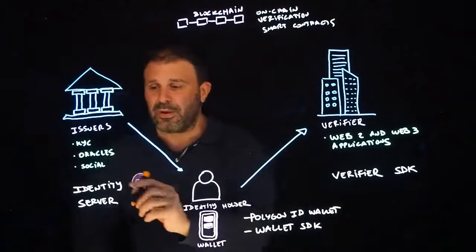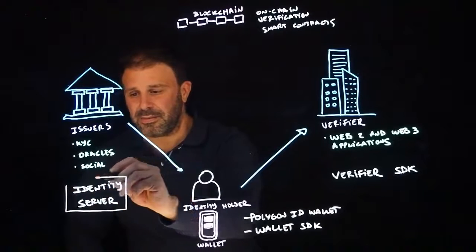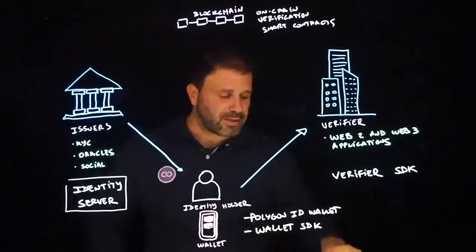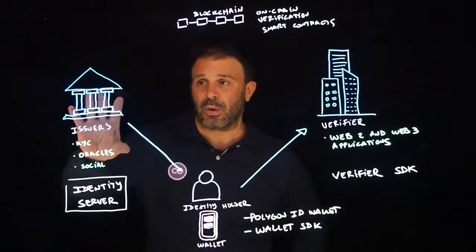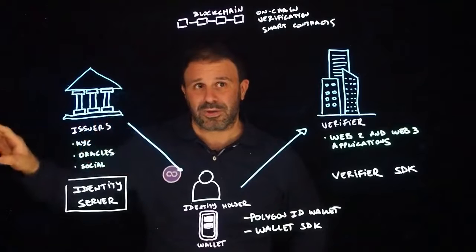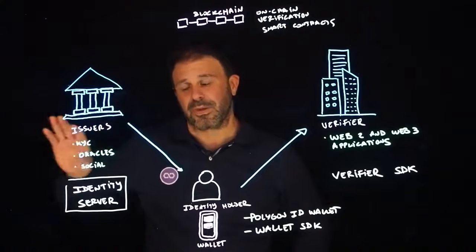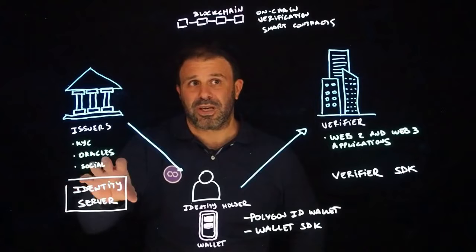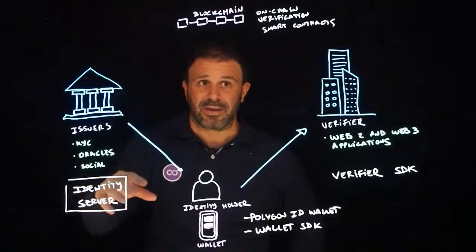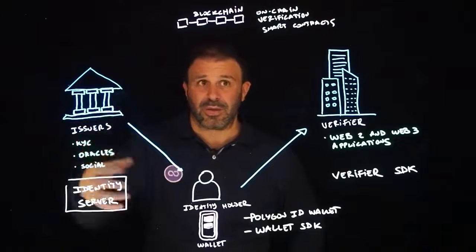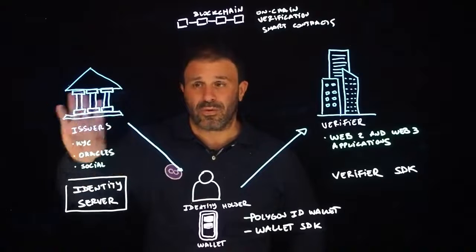So Polygon ID offers the identity server. The identity server is an application that issuers can download and host on their own servers, keeping all the data safe on their site. The identity server exposes a number of endpoints as APIs that can be used by the issuer to automate the issuance of credentials inside their workflows.